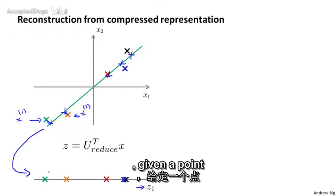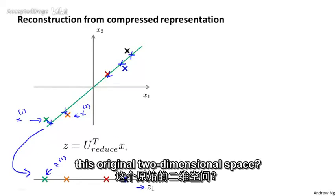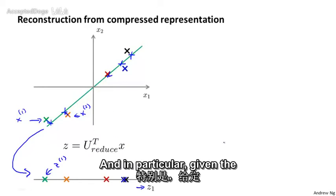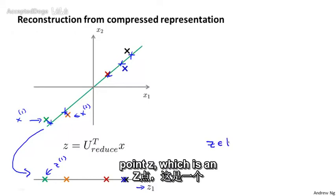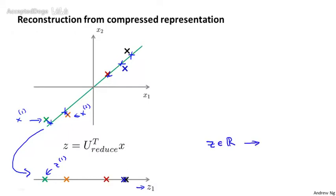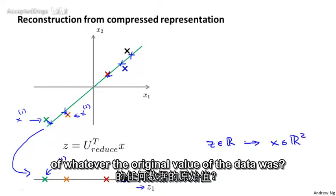So given a point like this, given a point z1, how can we go back to this original two-dimensional space? In particular, given a point z which is in R, can we map this back to some approximate representation x in R² of whatever the original value of the data was?